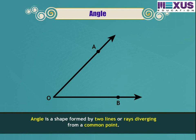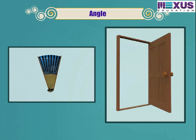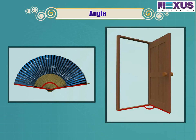An angle is formed when a corner is formed. It is a shape formed by two lines or rays diverging from a common point. We can see an angle formed between objects. If we move the hands of a fan, the angle between them also increases.